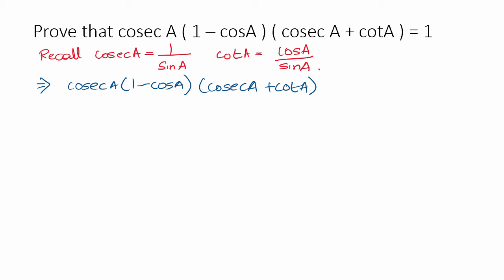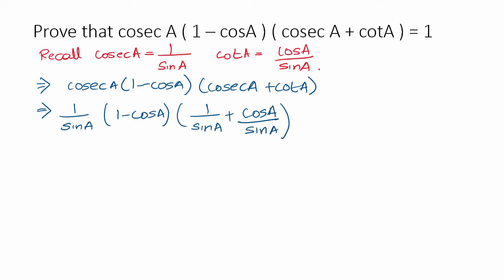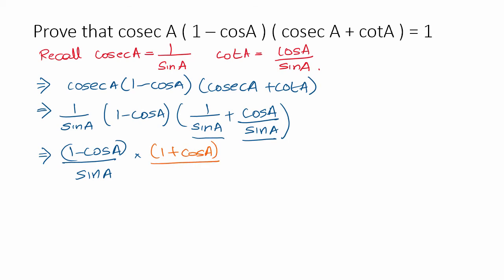So that is what they have asked. Now we simplify by substituting cosecant A. Cosecant A will become 1 over sin A, multiplied by (1 minus cos A). The numerator becomes 1 plus cos A divided by sin A.